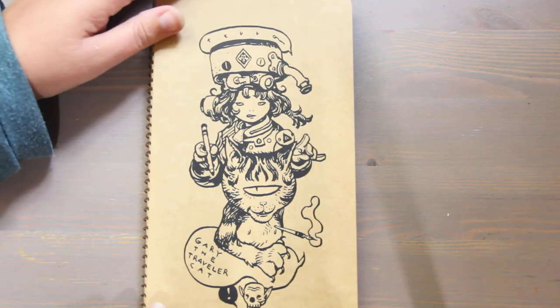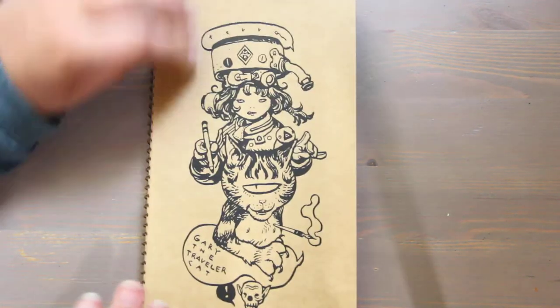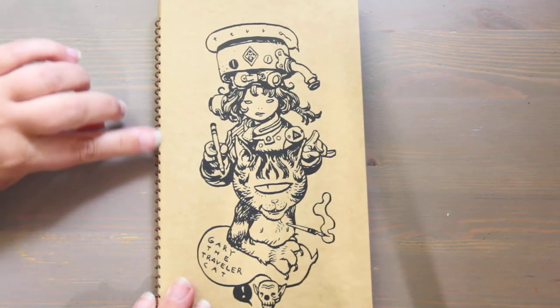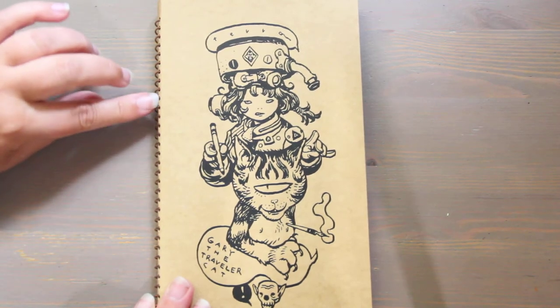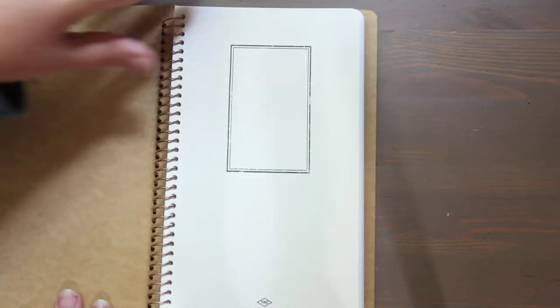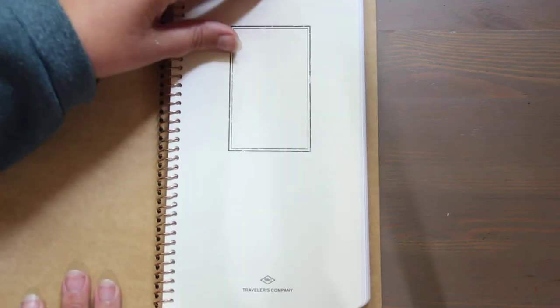I don't typically buy a lot of wire bound things because the paper moves around a lot. But I love Traveler's Company. I love the quality of their paper. And I thought, you know what? Why not? It has a ton of pages. It might be fun to do character design or something vertical in this book.